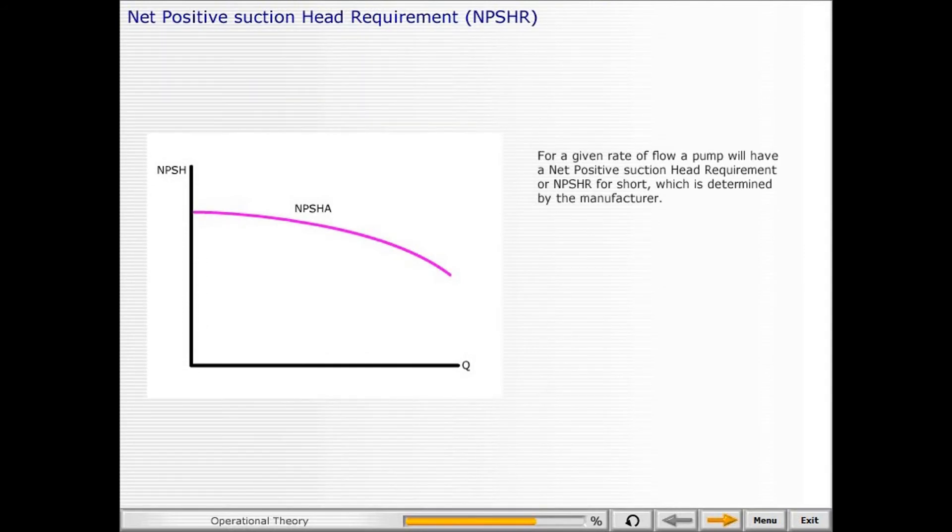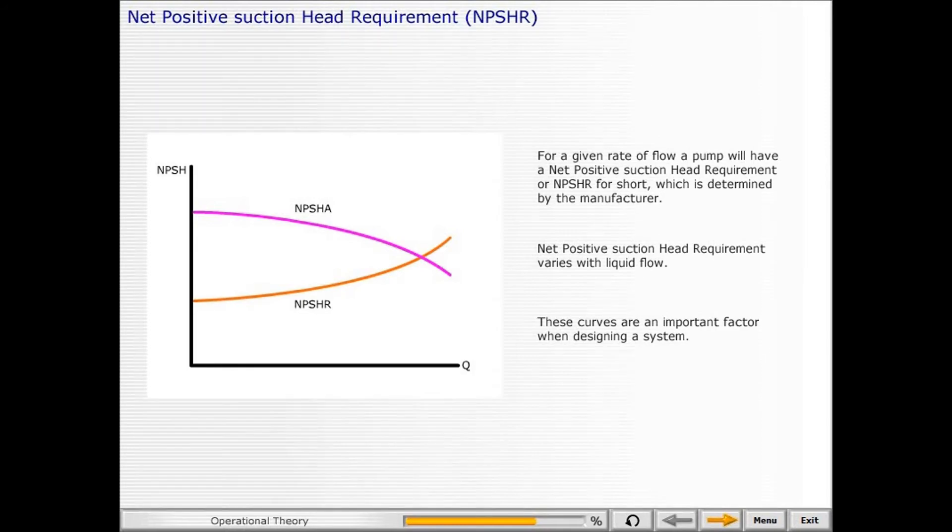For a given rate of flow, a pump will have a net positive suction head requirement, or NPSHR for short, which is determined by the manufacturer. Net positive suction head requirement varies with liquid flow. These curves are an important factor when designing a system.